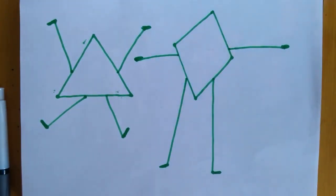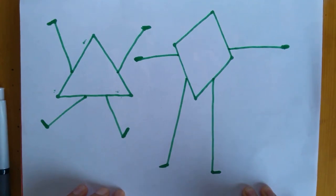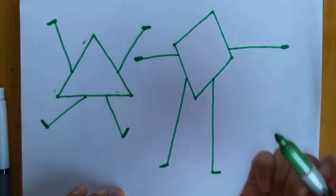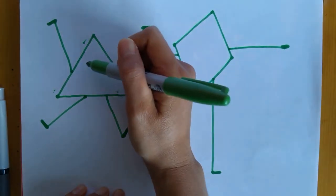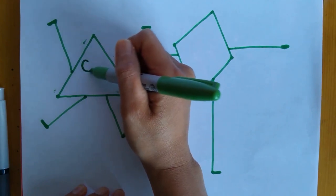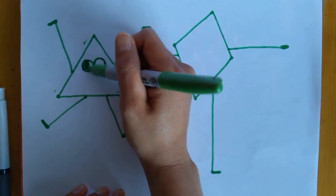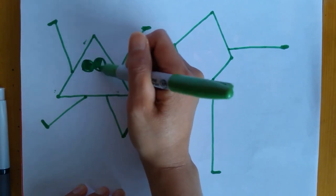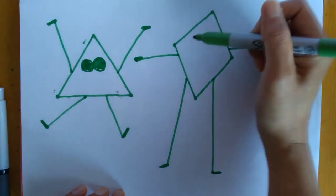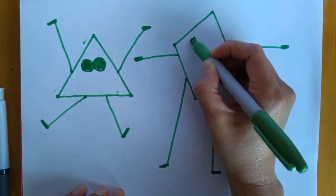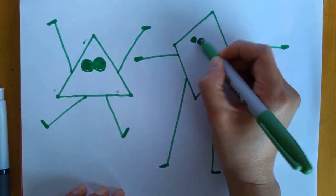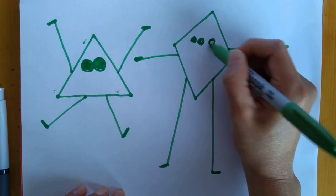All right, does he need some eyes? I think he needs some eyes. Here we go. Circle eyes. Two eyes. He could have three eyes if he wanted. Let's do three eyes for the diamond. One, two, three.